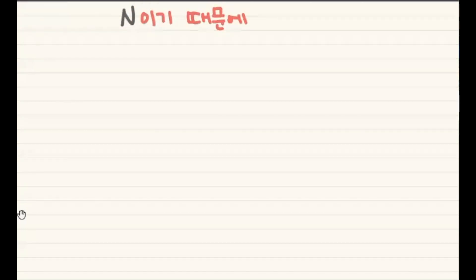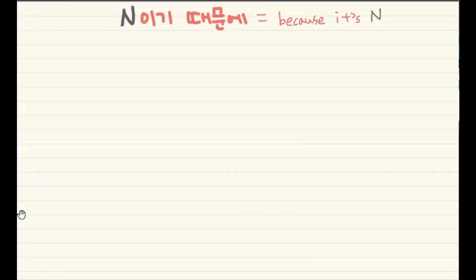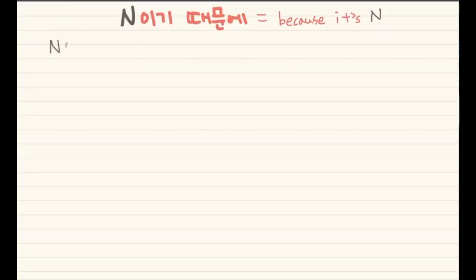So, 이기 때문에 means 'because it's something.' Noun 때문에 means 'because of noun,' but noun 이기 때문에 means 'because it's noun.' So the structure is: noun + 이기 때문에.